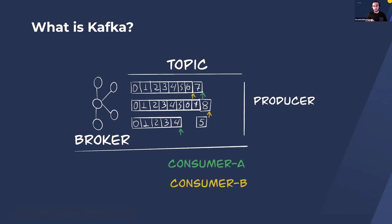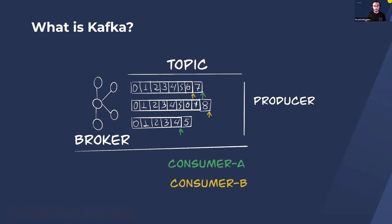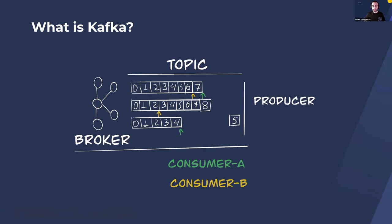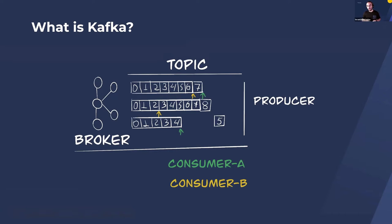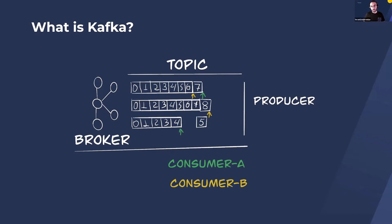Topics are split into multiple partitions and those partitions can be on a single broker or on multiple brokers, with one broker being the leader for a single partition. Clients talk to the leader in order to write data to the topic. Producers produce data into append-only log files that Kafka manages, and consumers can consume data from those partitions in parallel.